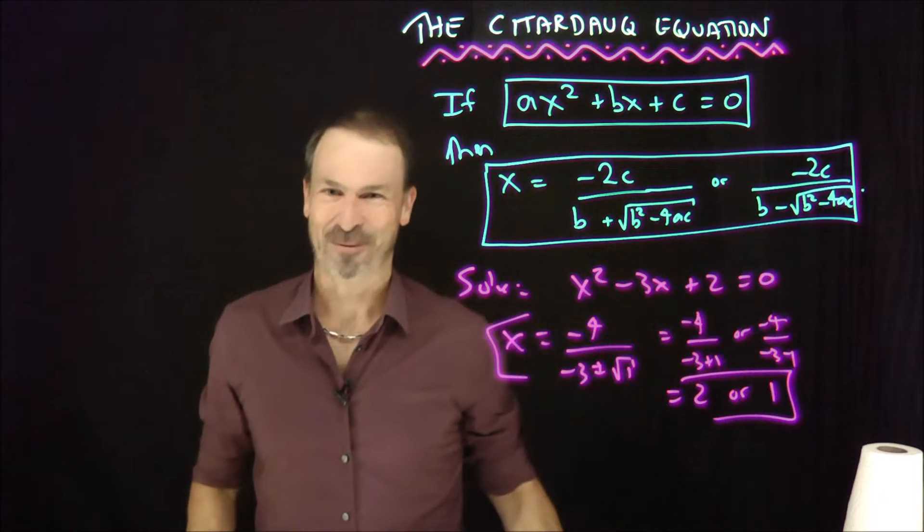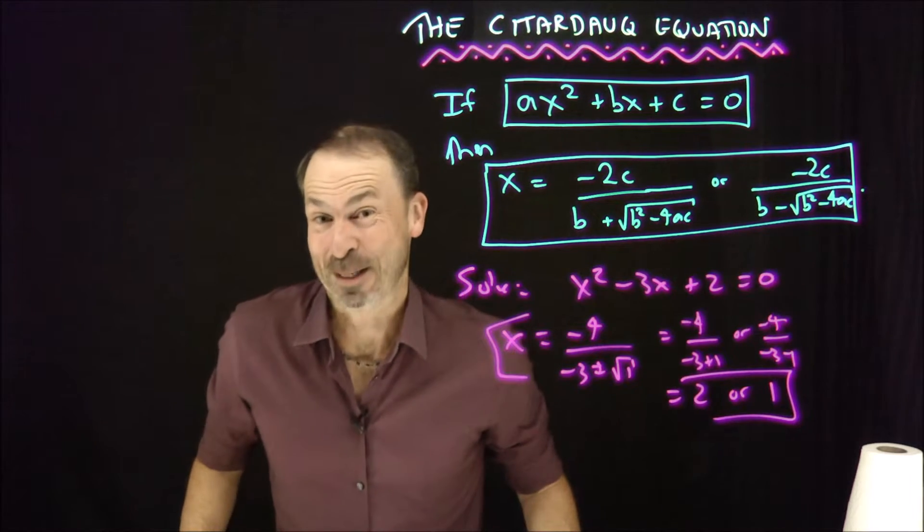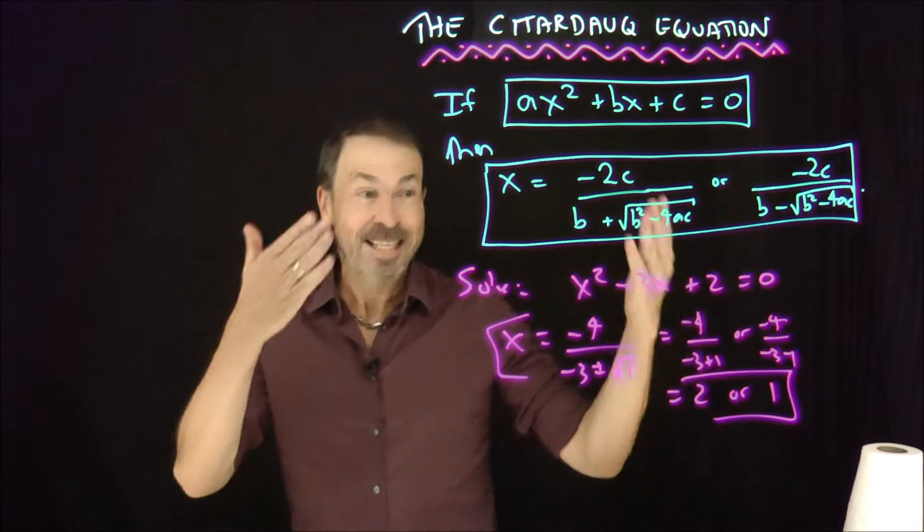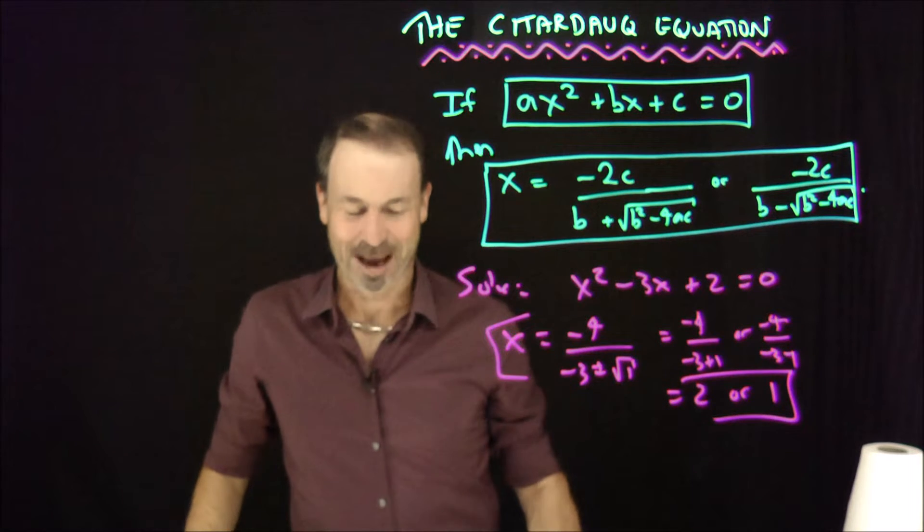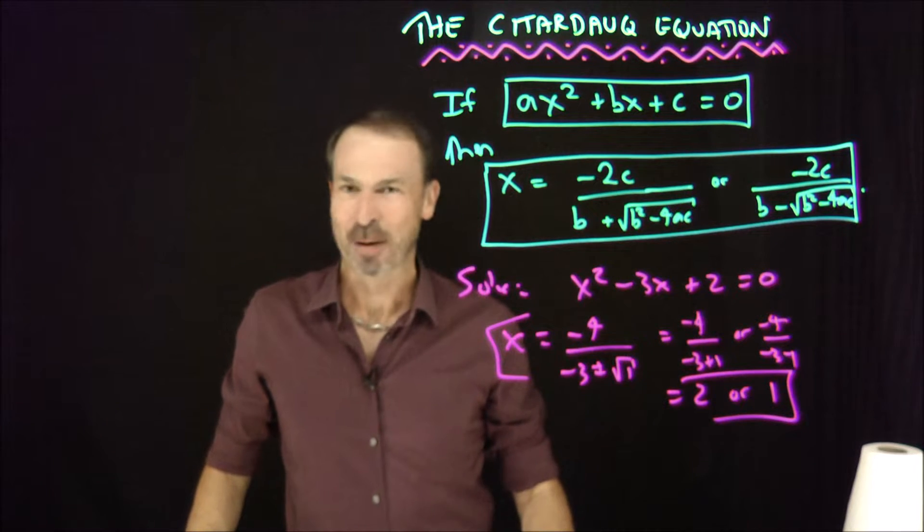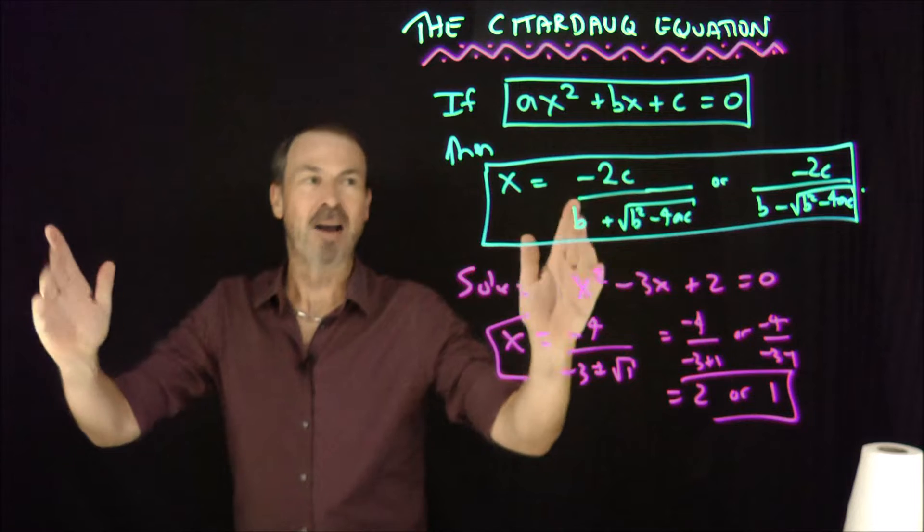The Ceta-Dorc formula. Very, very weird. Let me derive it for you right now. This is actually valid. It does solve all quadratic equations. Well, there's a little caveat about zero solutions, but let's talk about this. In fact, here's the way to derive it.